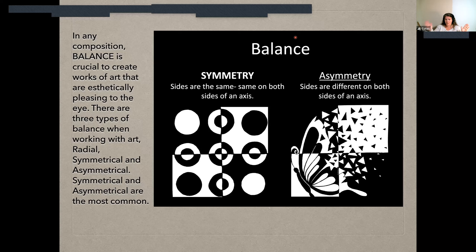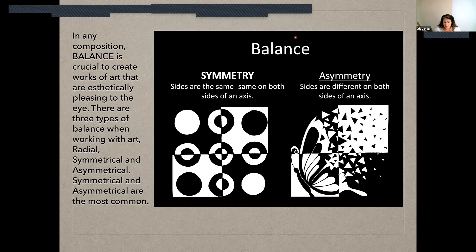Asymmetrical means that the sides on both sides of the axis line are different — there are different objects, different levels of black and white. If you take a look at the butterfly and draw a vertical line down the center, you'll see the top corner is primarily black with a little bit of white, but the bottom gives more white with a little bit of black — and it's the opposite on the other side. They are different but equally balanced because of the number of objects or colors used.